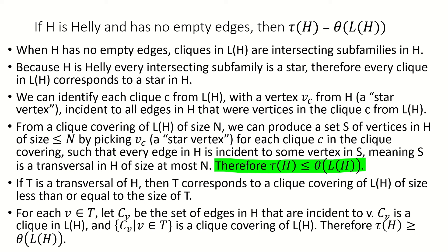Since T is a transversal, the union of each of these sets has to exhaust all the edges of the hypergraph. So the union of these cliques in the line graph has to exhaust all the vertices of the line graph, meaning that the set of these cliques is a clique covering. This means the line graph's clique-covering number is at most equal to the transversal number. Together, this means that the line graph's clique-covering number equals the hypergraph's transversal number.